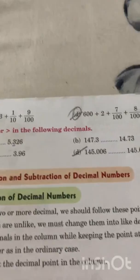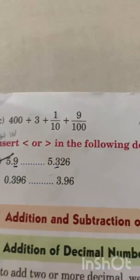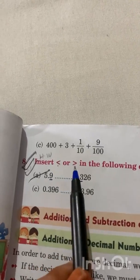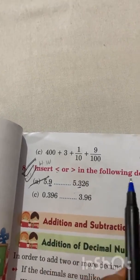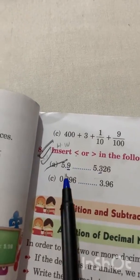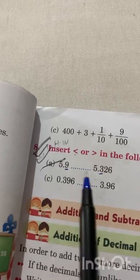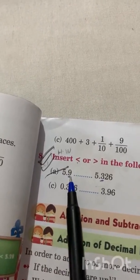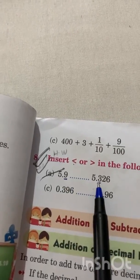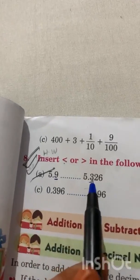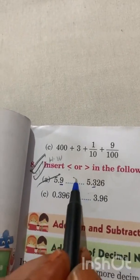Now come to our last question: insert the smaller or greater sign. We have to put the comparison sign. As you can see, the whole numbers are same — both are 5. So we will compare the tenth part. 9 is greater than 3, so 5.9 is greater than 5.326. We put the greater-than sign here.